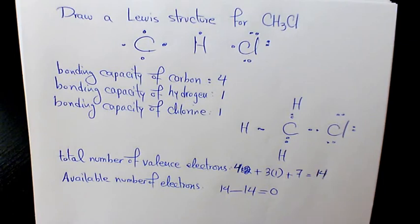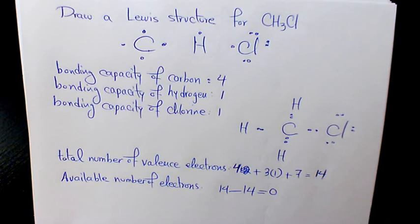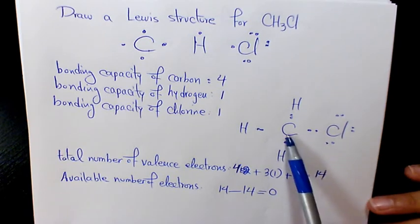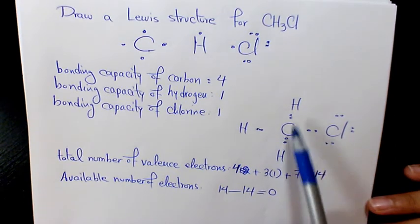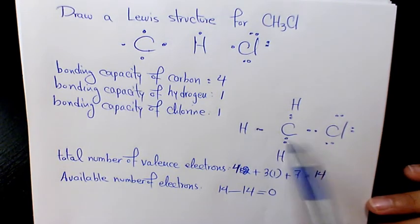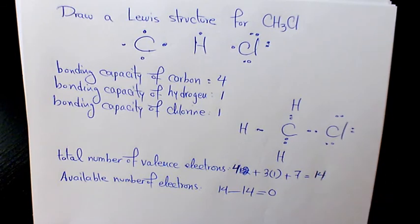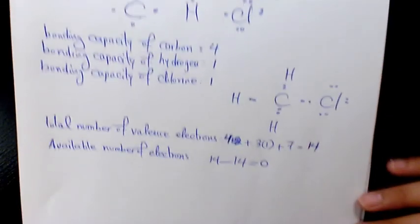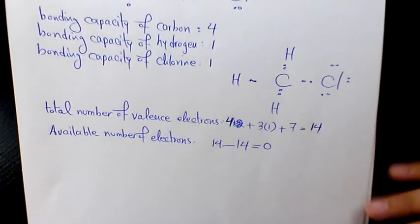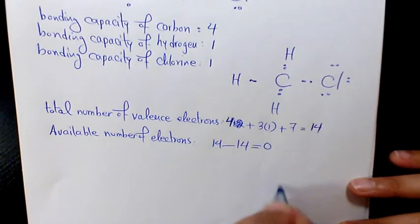Now we check if we have a complete octet for each atom. Hydrogen satisfies the duet rule — we're good. Carbon has two, four, six, eight — we're good. Chlorine has two, four, six, eight — great as well. So the structure is almost finished.